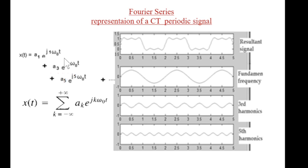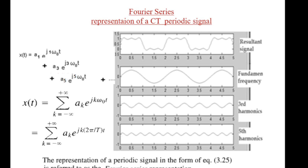This is the form which can also be written in another form. Instead of omega naught we write 2π by T. This form is called the Fourier series representation of periodic signal.